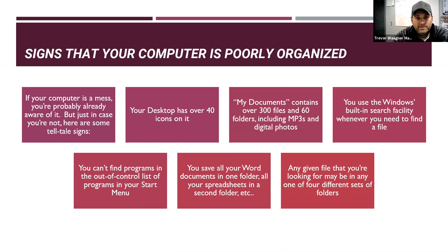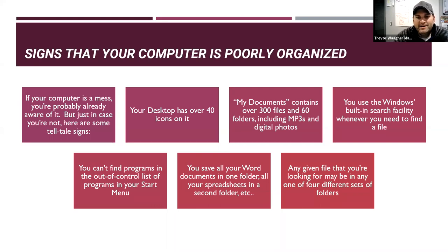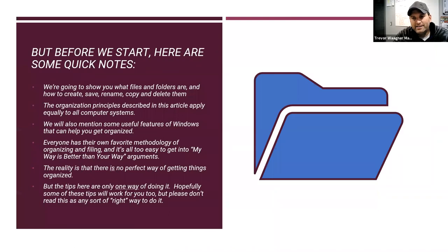Not being able to find program files you want to run is an organizing issue beyond just documents, music, or photos. If you save all your Word documents in one folder and all your spreadsheets in a second folder, we can help you with that today. If any given file you're looking for might be in one of four different sets of folders — like a weekend example where I needed a family picture and found one on OneDrive but couldn't access the ones my wife saved because I switched phones — that's the kind of disorganization we want to address.